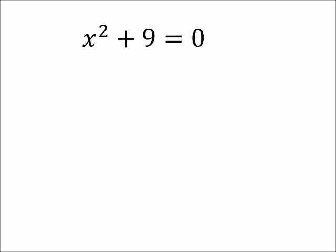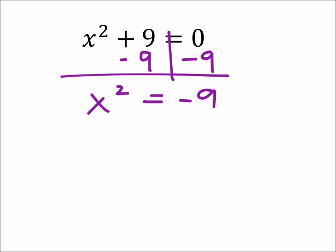By that, I mean we would want x² on its own side of the equal sign. So I'm going to subtract 9 from both sides, giving me x² equals negative 9.